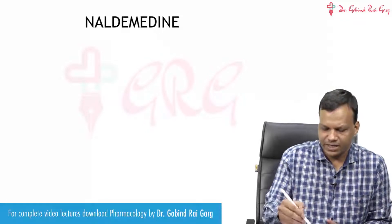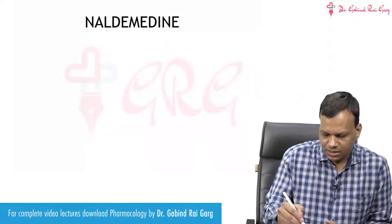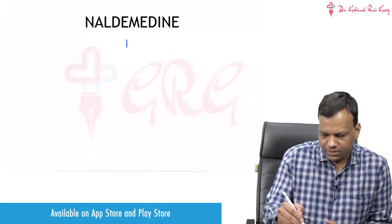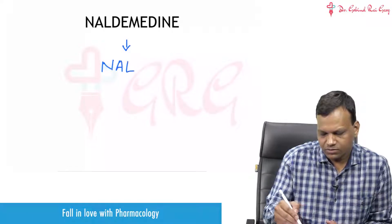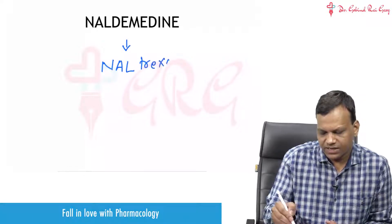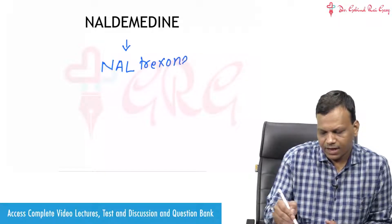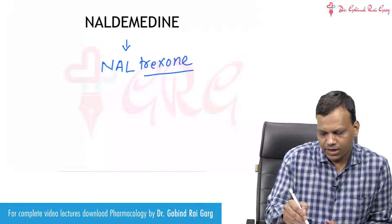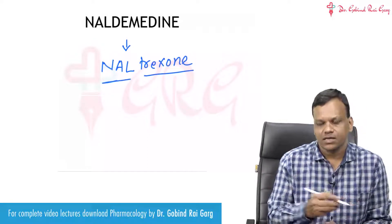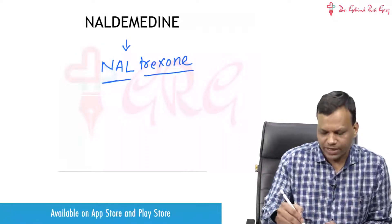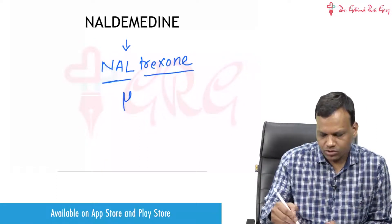Naldimedine is a drug similar to naltrexone. The name comes with 'nal'. The drugs which start with 'nal' — naltrexone, naloxone, nalmedine — these are all opioid antagonists.